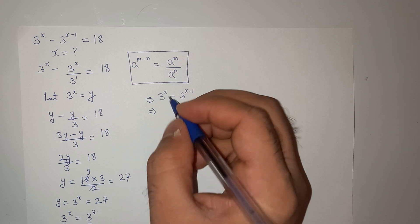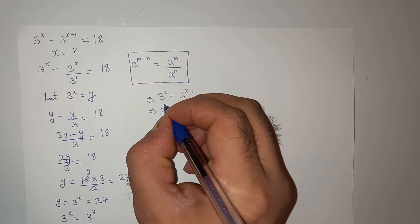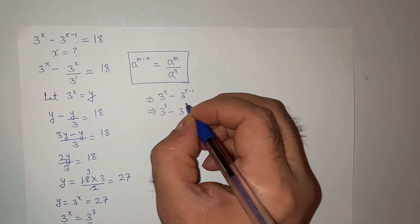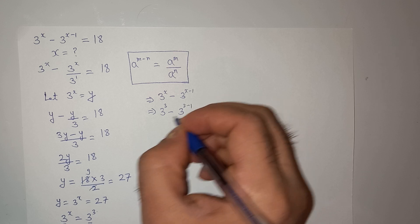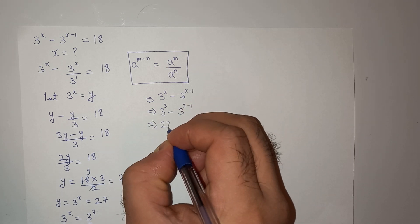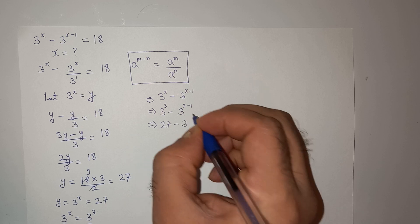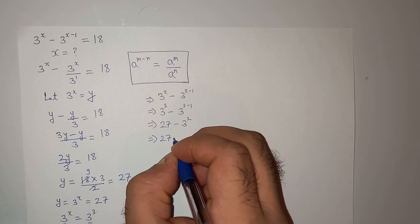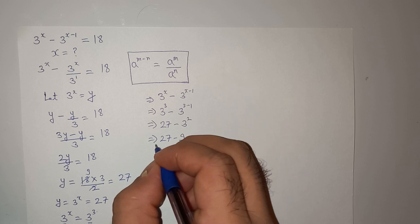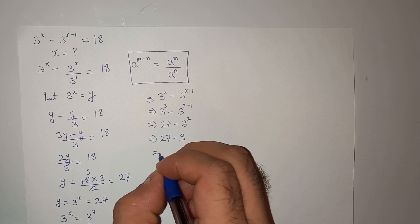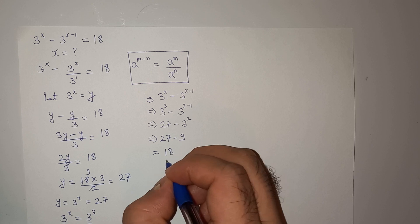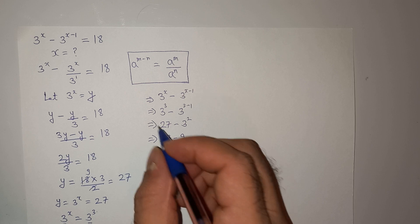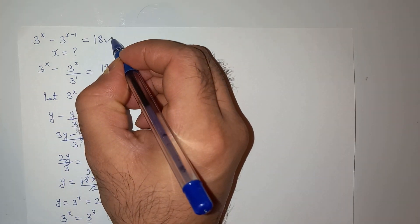So the value of x was 3. So 3 cube minus 3, 3 minus 1. So this 3 cube is 27, and this is going to be 3 square. So 27 minus 3 square is 9. So this is going to give us the value 18. So this is matching with the original equation value.